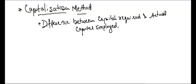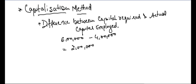What it means: suppose by this method the capital requirement is 6 lakhs, but the actual capital employed is 4 lakhs. Now this 2 lakh is goodwill — because I am earning more profit by employing less capital.